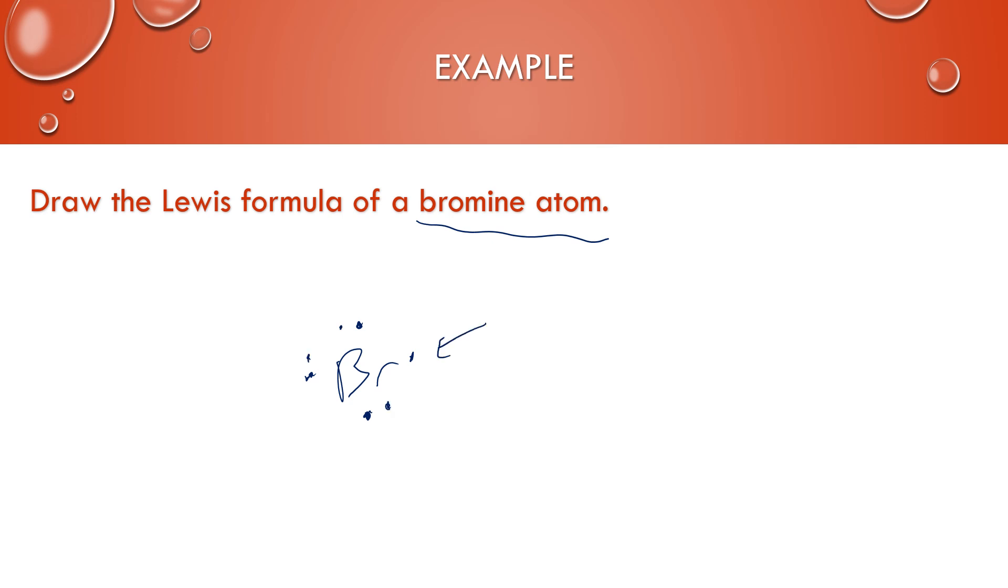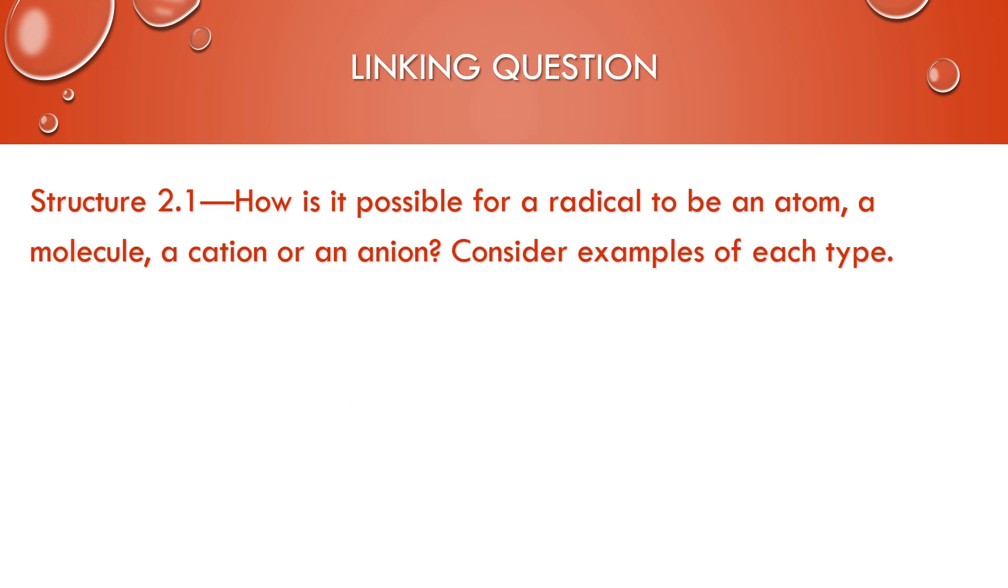And this topic links to structure 2.1: How is it possible for a radical to be an atom, a molecule, a cation, or an anion? And it said to consider examples of each type. We've looked at many in this presentation already.